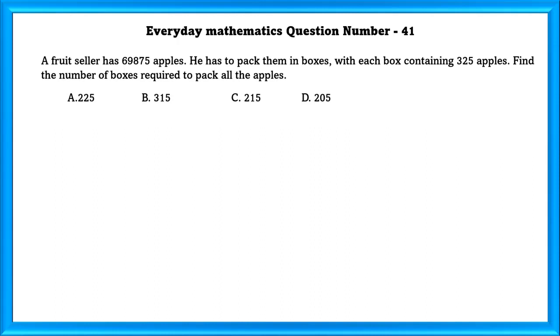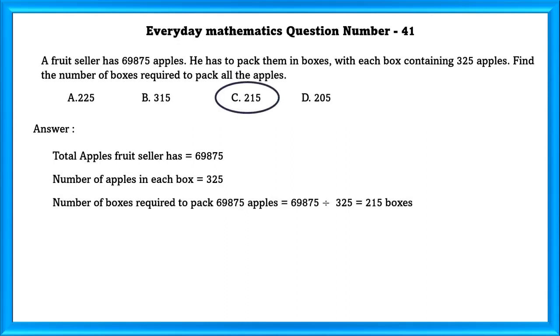Every day mathematics question number 41. A fruit seller has 69,875 apples. He has to pack them in a box with each box containing 325 apples. Find the number of boxes required to pack all the apples. Total apples fruit seller has is equal to 69,875. Number of apples in each box is equal to 325. Number of boxes required to pack 69,875 apples is equal to 215 boxes.